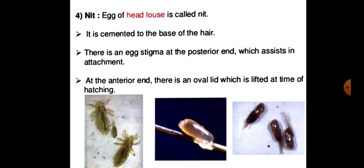The next type is the knit egg — eggs of the head louse. It is cemented to the base of the hair. There is an egg stigma at the posterior end which assists in attachment. At the anterior end there is an oval lid which is lifted at the time of hatching.